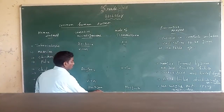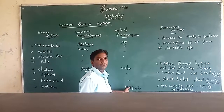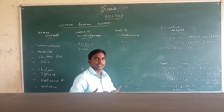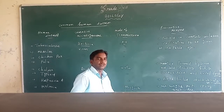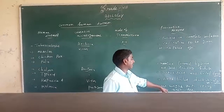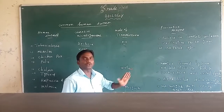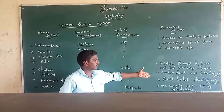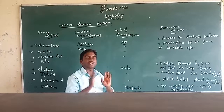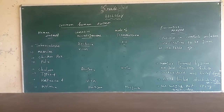The last common disease is malaria. Malaria is a protozoa disease. This disease is passed through mosquitoes, especially during the rainy season when mosquito breeding increases. To prevent malaria, use a mosquito net, spray insecticides, and control mosquito breeding sites.